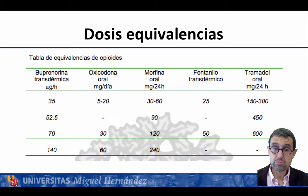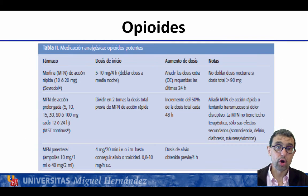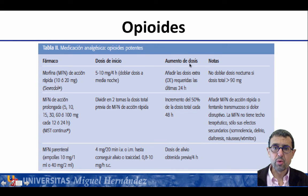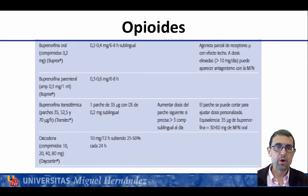Existe un esquema sencillo de equivalencia entre los cuatro opioides clásicos en el tratamiento analgésico del paciente oncológico. En las tablas detalladas están el fármaco, dosis de inicio, cuándo aumentar y notas de utilidad, incluyendo fentanilo de liberación rápida y prolongada, buprenorfina oral, parenteral o transdérmica, y oxicodona con todos sus preparados.